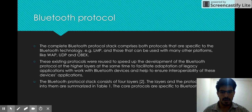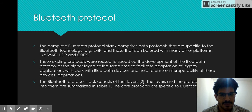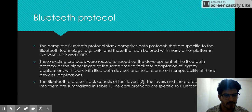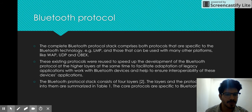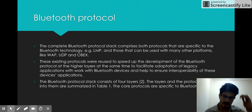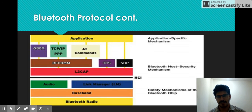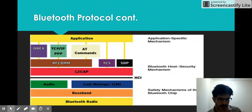The complete Bluetooth protocol stack comprises both protocols specific to Bluetooth technology, such as LMP, and those that can be used with many other platforms like WAP, UDP, and OBEX. These existing protocols were reused to speed up development at the higher layer and to facilitate adoption of legacy applications with Bluetooth devices, helping ensure interoperability. The Bluetooth protocol stack consists of four layers: an application layer, a protocol layer, then L2CAP, a host control layer, and hardware. Hardware consists of radio frequency blocks because Bluetooth technology works on radio frequency.